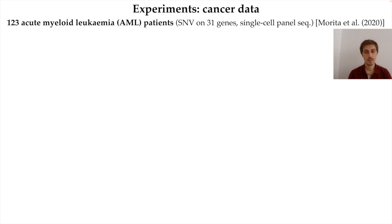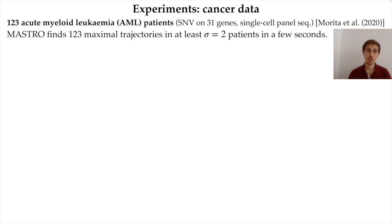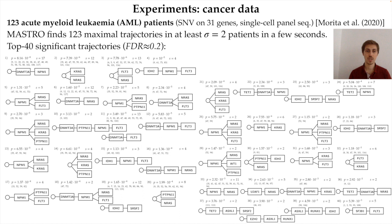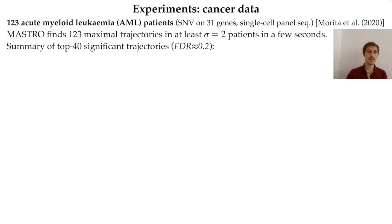We applied MASTRO to cancer data from 123 acute myeloid leukemia patients. On this data, MASTRO finds 123 maximal trajectories observed in at least 2 patients in just a few seconds, so it is very fast. It also identifies 40 trajectories as the most significant with small FDR, shown in this figure. MASTRO finds complex patterns involving many genes with low p-values that cannot be reported by previous works. All details on these results can be found in the paper.